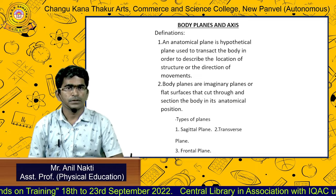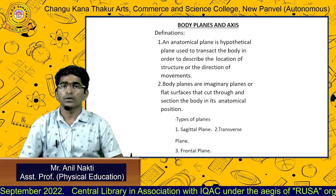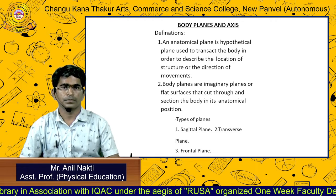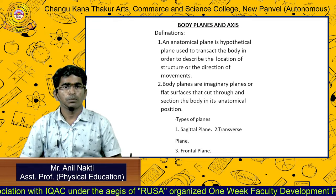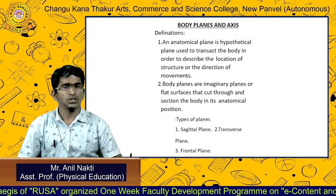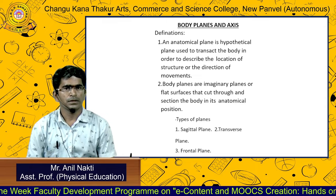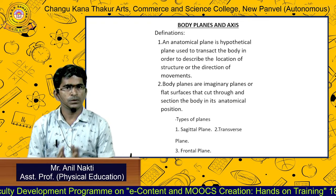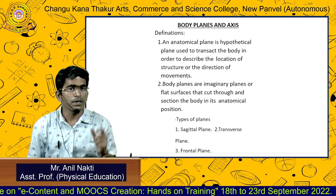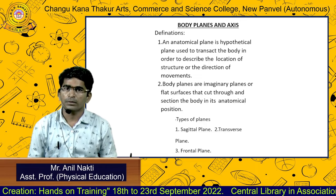What are body planes? An anatomical plane is a hypothetical plane used to transect the body in order to describe the location of structures or the direction of movements. Second definition: body planes are imaginary planes or flat surfaces that cut through and section the body in its anatomical position. Those specific parts are planes, and the specific lines we call axis.